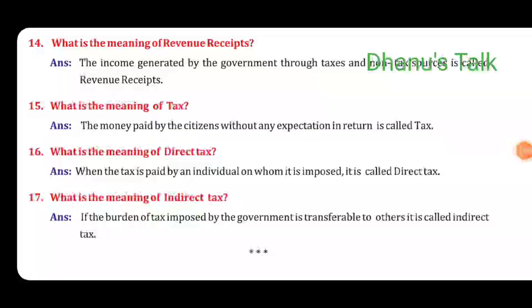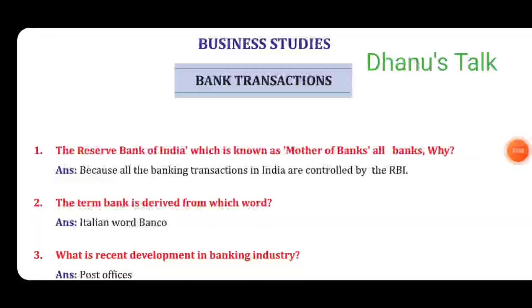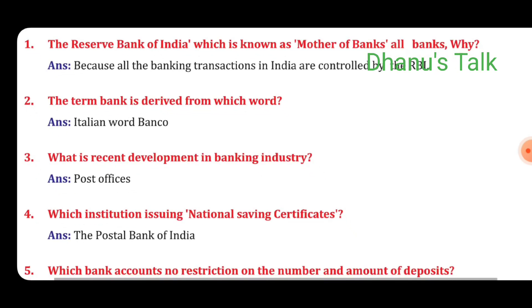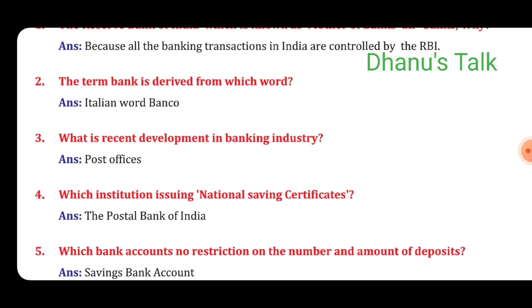From Business Studies, Chapter: Bank Transactions. Question No. 1: The Reserve Bank of India is known as the mother of all banks. Why? Answer: Because all banking transactions in India are controlled by the RBI. Question No. 2: The term 'bank' is derived from which word? Answer: The Italian word 'banco'. Third question: What is a recent development in the banking industry? Answer: Post offices. Fourth question: Which institution issues national saving certificates? Answer: The Postal Bank of India.